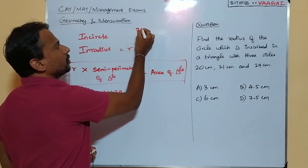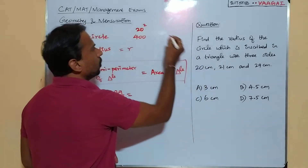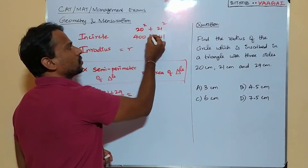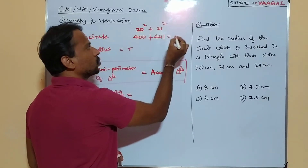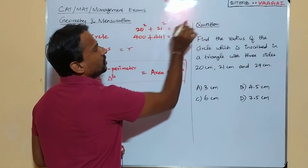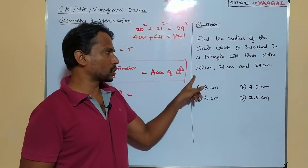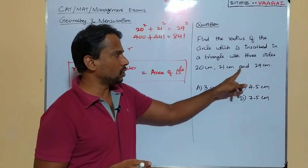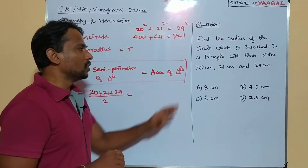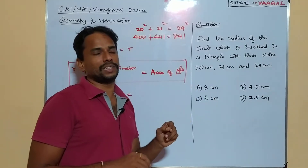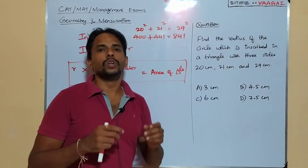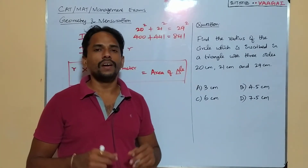Let's compute: 20² = 400, and 21² = 441. Adding them: 400 + 441 = 841, which is exactly 29². So the sum of the squares of the two shorter sides equals the square of the longest side. By the Pythagorean theorem, this confirms the triangle is a right-angled triangle.